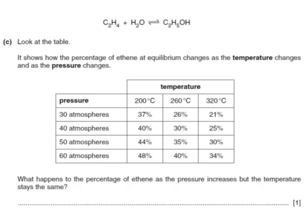The second part of the question shows a table of how the percentage of ethene at equilibrium changes as the temperature and pressure change. What happens to the percentage of ethene as the pressure increases but the temperature stays the same? We look down one particular column — let's look at 260°C. As we increase the pressure from 30 to 40 to 50 to 60 atmospheres while keeping the temperature at 260, the percentage increases. So the percentage of ethene increases.